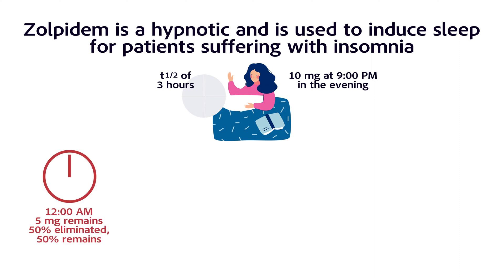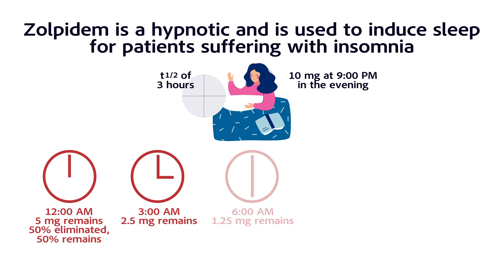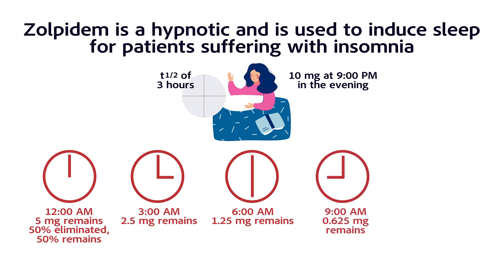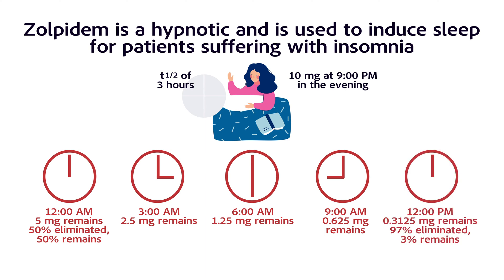three hours later at midnight, 50 percent of the dose has been eliminated and 50 percent remains in the blood — so five milligrams will remain in the bloodstream. Three more hours later at 3 a.m., the dose is cut by another 50 percent: 2.5 milligrams in the blood. Three more hours: 1.25 milligrams remain. Three hours later again: 0.625 milligrams. Three hours later, it's now noon the next day, and 97 percent of the drug is eliminated from the blood with only a very small amount remaining.